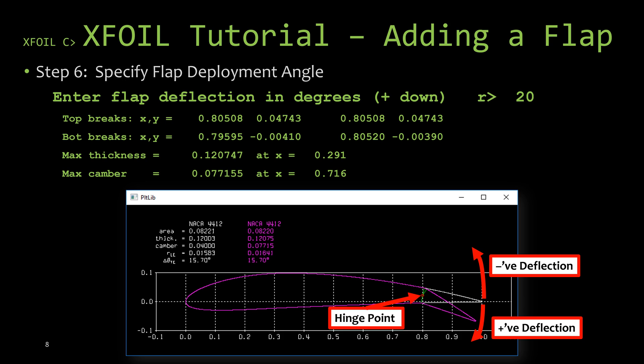The third parameter that the flap command wants to know is the angle that you want the flap deployed to. The angle that it's asking for is in degrees and a positive number would deploy the flap downward. For this exercise we're going to go ahead and choose 20 degrees, so we type in 20 and hit enter and XFOIL will give you some more information there about where it broke the airfoil. Now when you finish specifying these three parameters, if you look at the second window that XFOIL has open, you'll notice that it has the original airfoil shape along with the modified one laid on top of it. This is nice because it allows you to see how your change affects the airfoil that you started with.